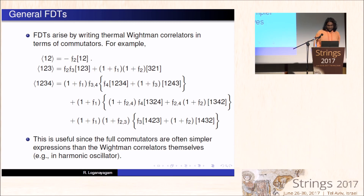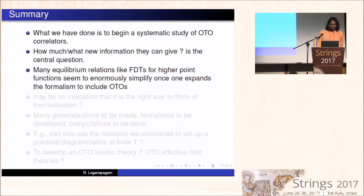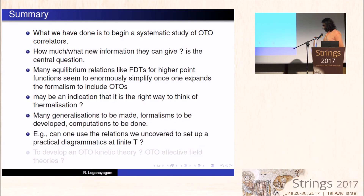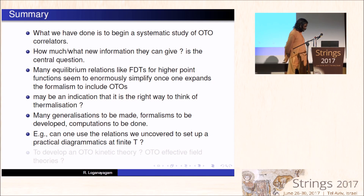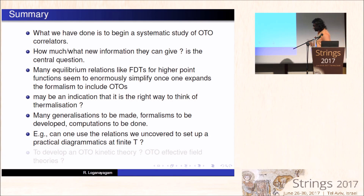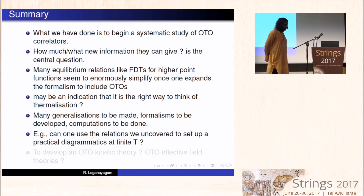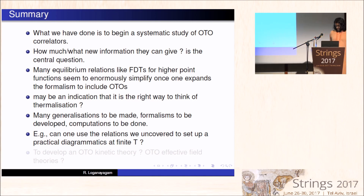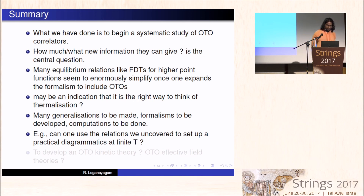Let me summarize. I have been very schematic for lack of time. There are many new things that need to be understood about out-of-time-ordered correlators. From my point of view, the most important thing is how much new information they can give. In equilibrium, three-point functions do not really give anything new; four-point functions do; five-point functions definitely do; and so on. The question is what new information they give. One of the reasons for writing the fluctuation-dissipation theorem and so on is that these particular correlators in terms of nested commutators actually have spectral information.